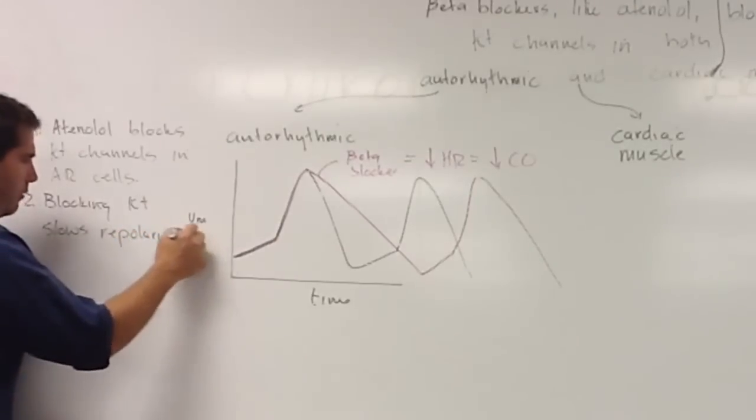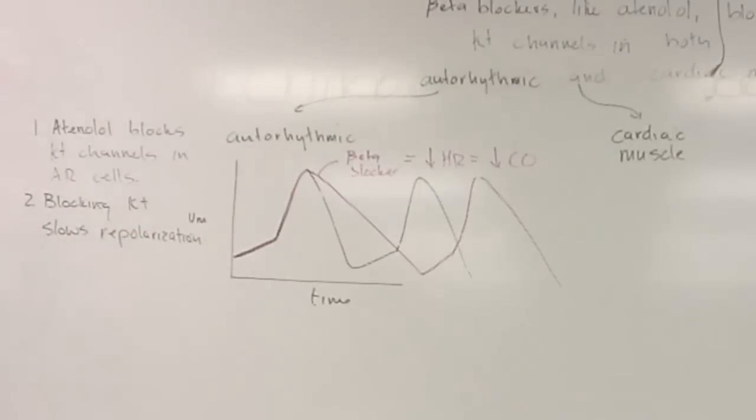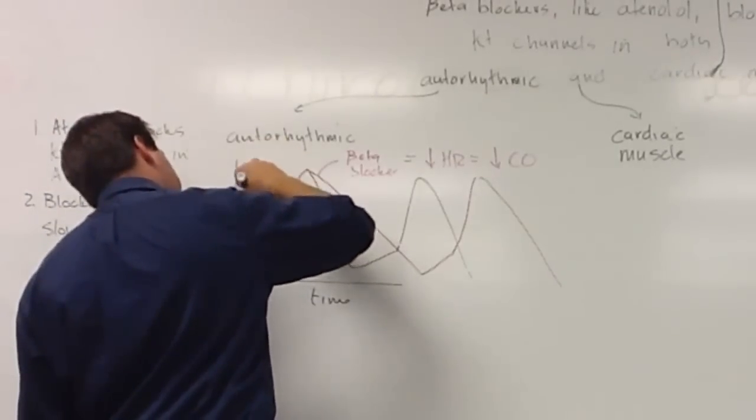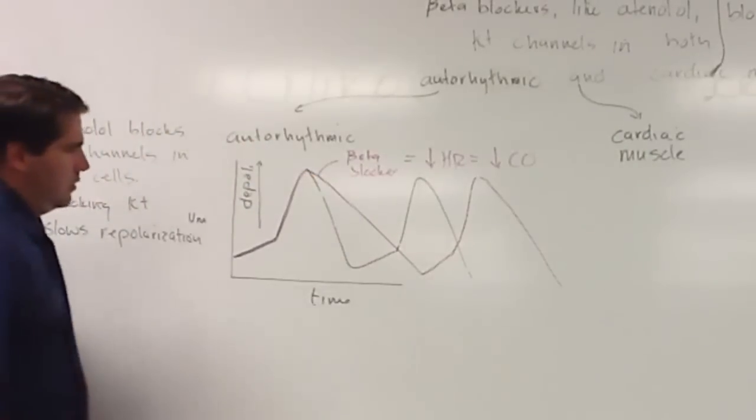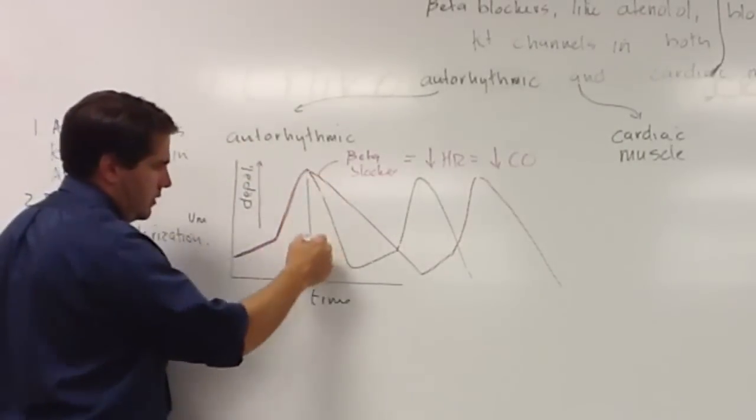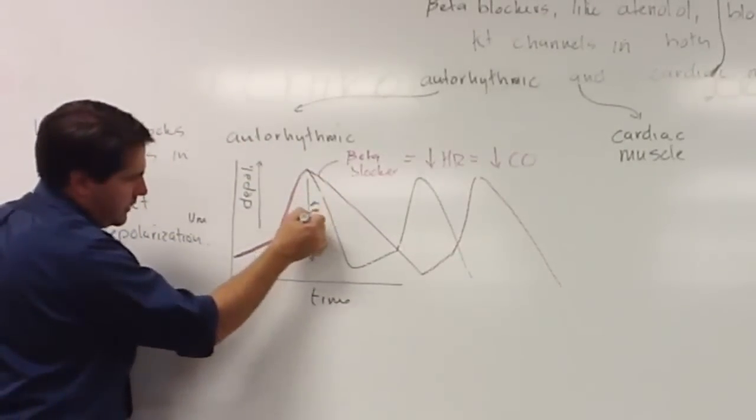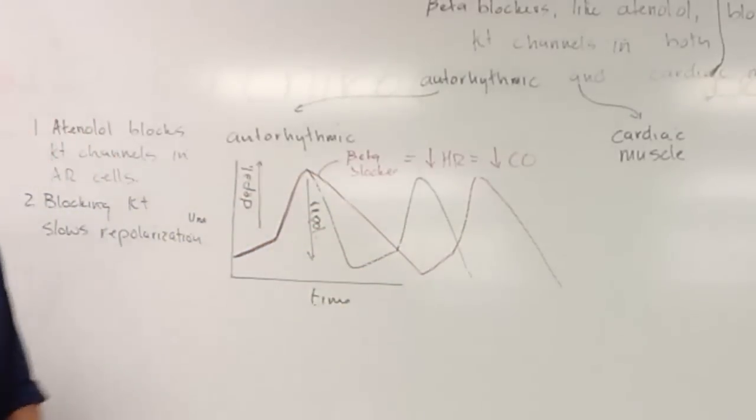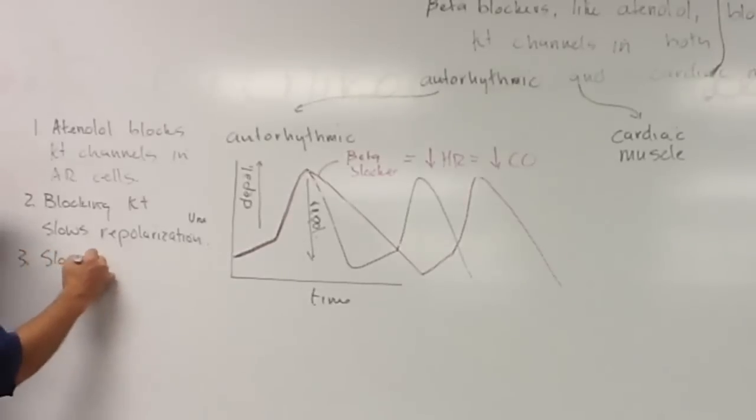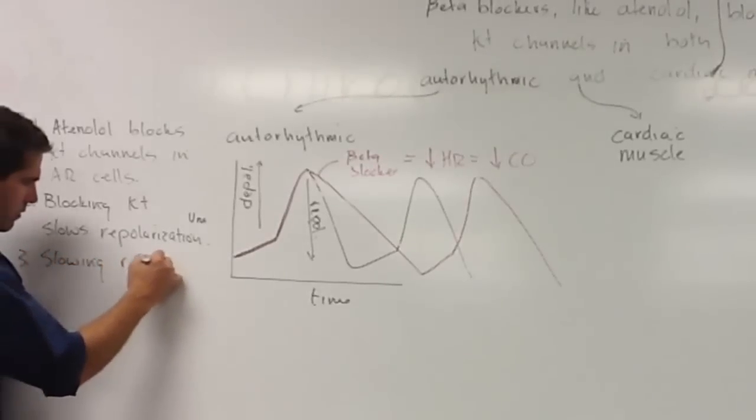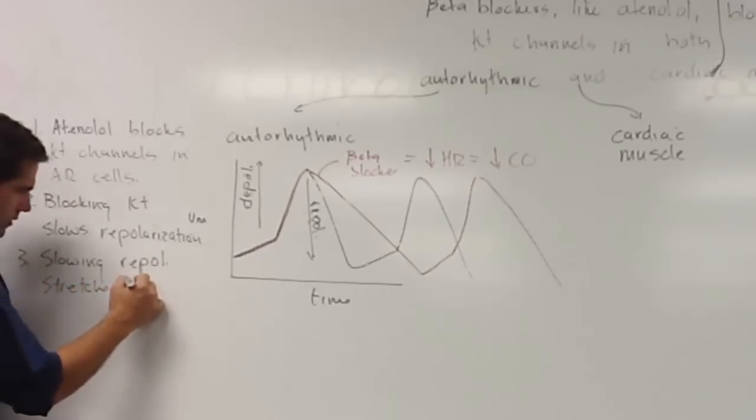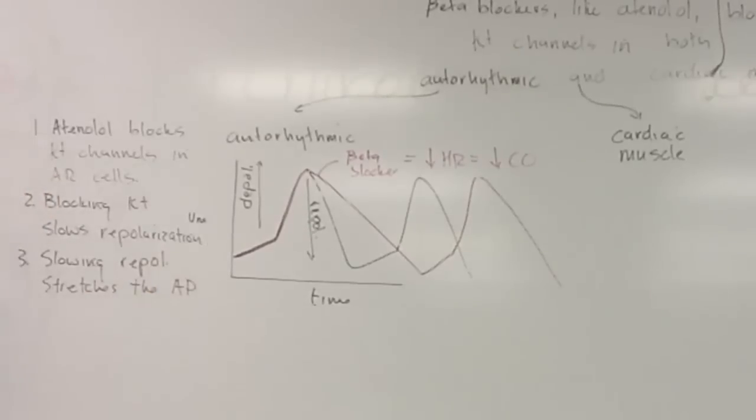Blocking potassium slows repolarization. Now these are terms you've probably heard in A&P1 when you talked about action potentials in neurons. But this is called depolarization, whereas this is called repolarization. And because this is happening slower, we're slowing repolarization.